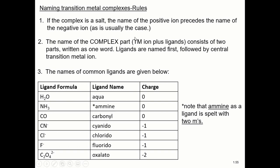In the name of the complex, it consists of two parts, all written together as one word. You name the ligands first, followed by the central transition metal ion. And here are the names of common ligands.